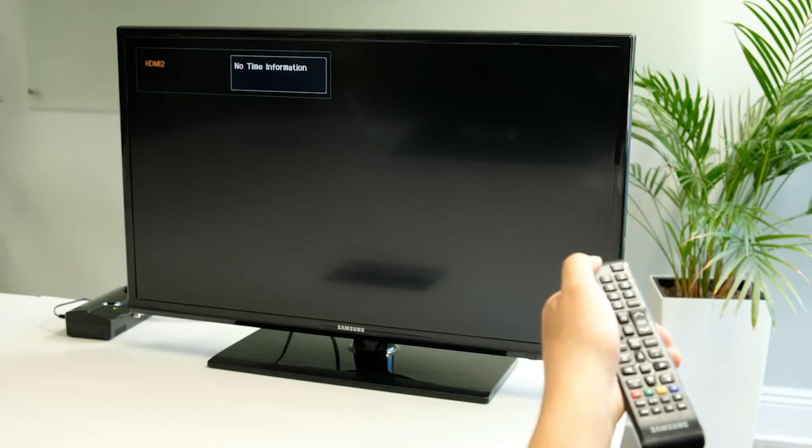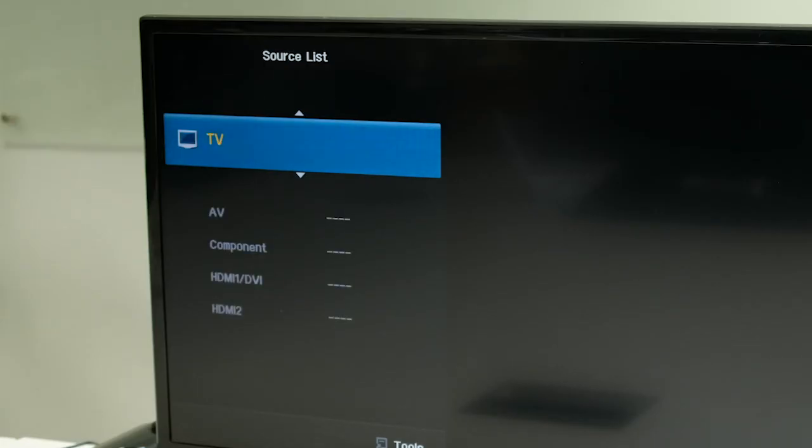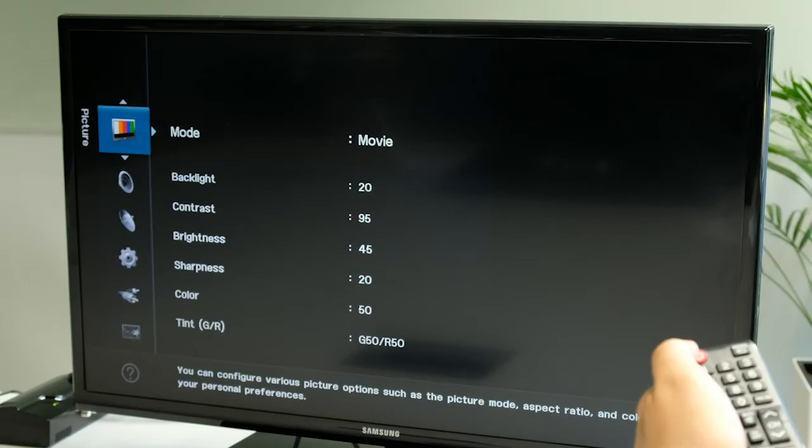Next, turn on your TV and in the menu settings, set your source to TV. Depending on your TV model, some menu and setting words might be slightly different.